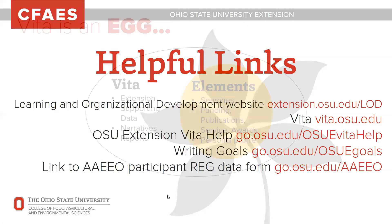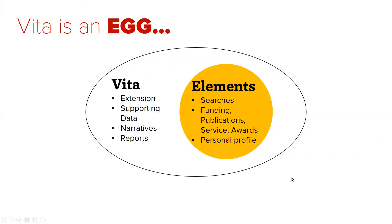Feel free to ask questions as we move along. The VITA system is a recording system created for the entire university. It's like an egg — the Elements portion, or the yolk, was purchased as a completed product from a company. This is where you can search for publications, add funding including grants, contracts, and fees, and record publications, service, or awards. There are also some small teaching items you'll put into Elements.